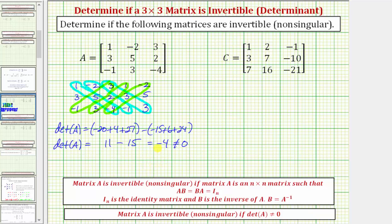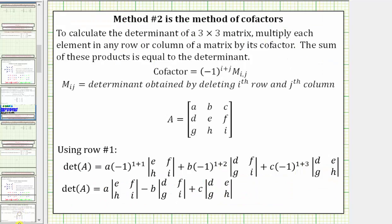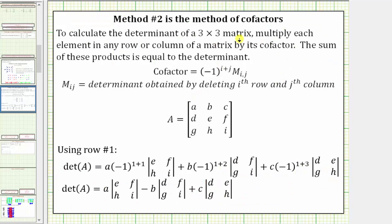Notice in this question, we're not asked to find the inverse matrix, so we just say matrix A is invertible. Now we'll find the determinant of matrix C, but for this determinant let's use the expansion by minors method, or the method of cofactors. If we use the first row for the expansion by minors, we can use the given formula to evaluate the determinant of the three by three matrix.